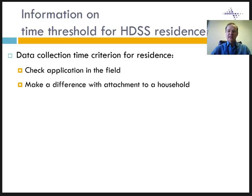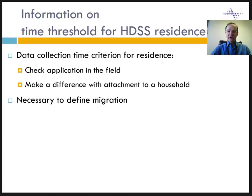Also, make a clear distinction between the criterion for residents and the attachment of migrants to their household of origin. One migrant may stay years out of the HDSS, just spending holiday time and intermittent visits, and still be attached to a household as a family member — sending remittances, for example. This time of residence criterion defines migration in and out of the HDSS.